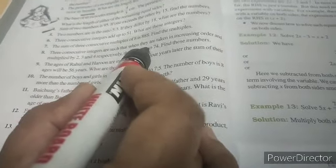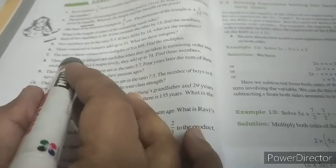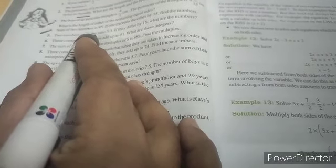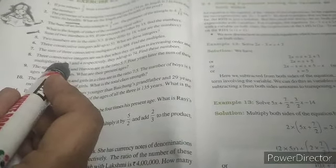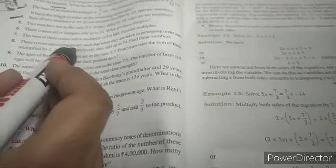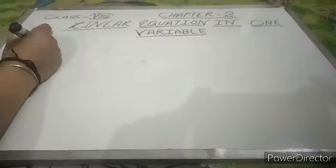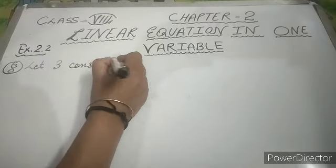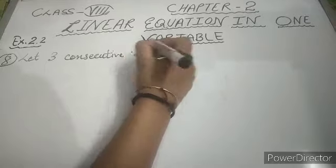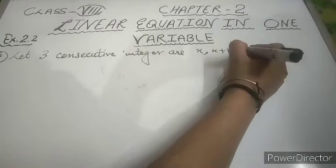Three consecutive integers are such that when they are taken in increasing order and multiplied by 2, 3, and 4 respectively, they add up to 74. Find these numbers. Here we take three consecutive integers as we did in question number 6. Let the three consecutive integers be x, x plus 1, and x plus 2.